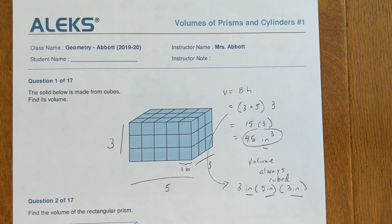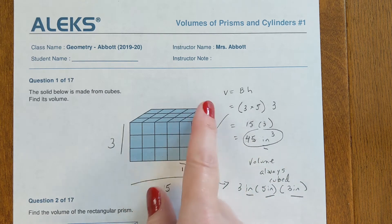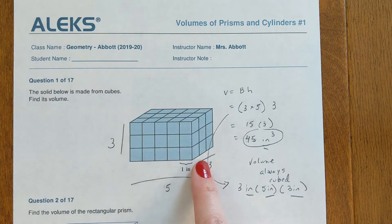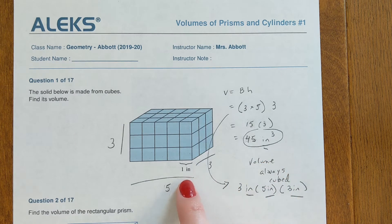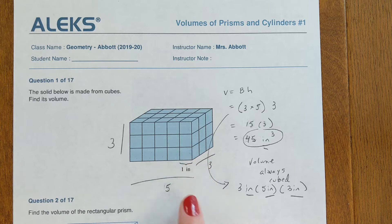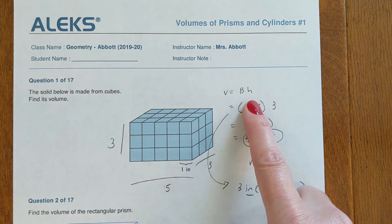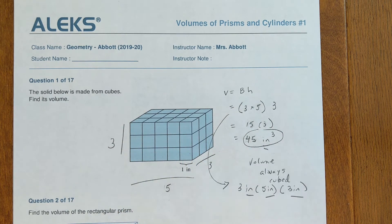Number one says a solid is made of cubes — find its volume. You can visualize it: the top of the box is three cubes by five cubes, so there are 15 cubes showing, stacked up by three, making 45 cubes or 45 inches cubed, because each cube is one inch by one inch by one inch. You could also use the volume of a rectangular prism, which is the area of the base times the height: three by five by three gives 45 inches cubed.